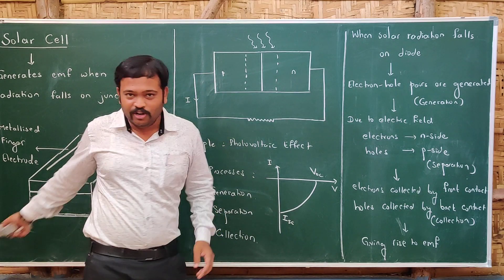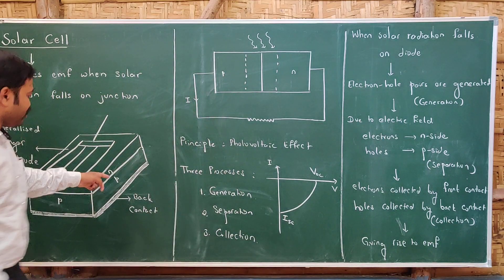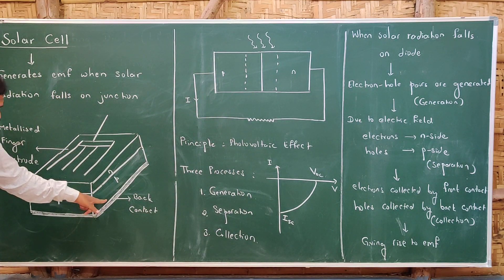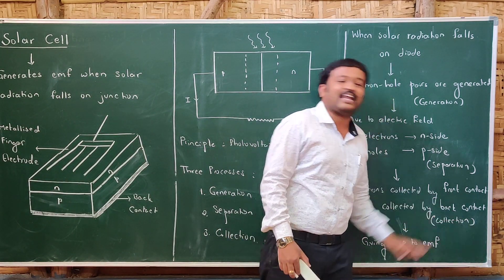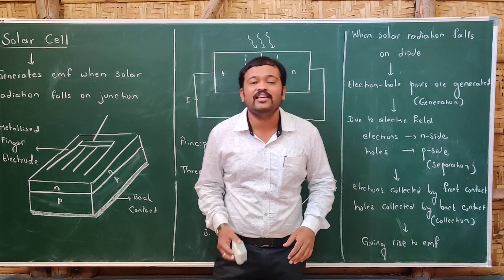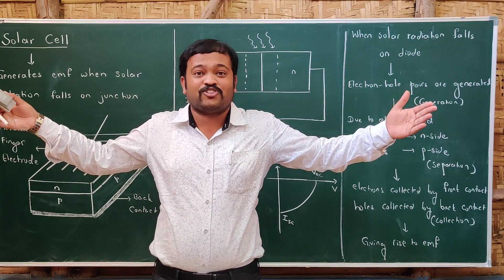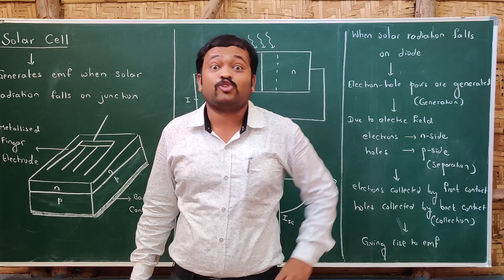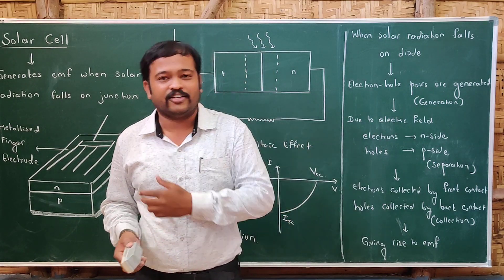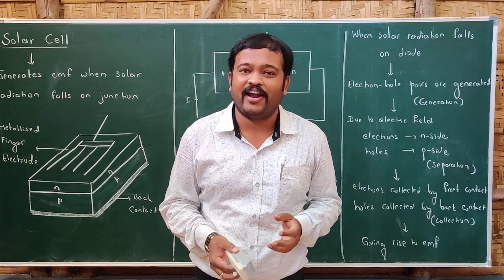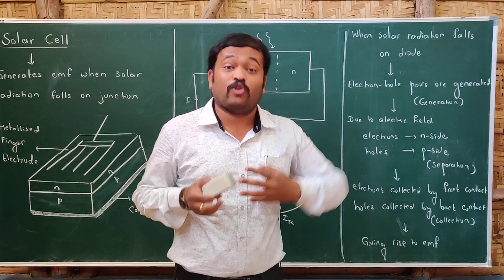When the electron-hole pairs are separated, the electrons collected at the N side are collected by the front contacts, and holes at the P side are collected by the back contact — this process is called collection. This gives rise to EMF. Solar cells have many applications: some calculators use solar radiation, and space vehicles use solar radiation for power. There are many more applications in the field of solar cells.